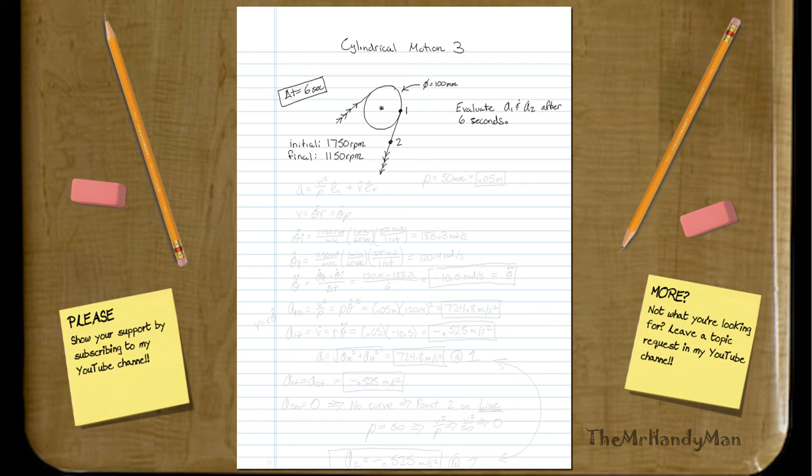And it says, after that 6 seconds, what will the acceleration at point 1 and point 2 be? First of all, let's just write out our equation for acceleration. That will be acceleration equals v squared over rho normal plus v dot et tangential.